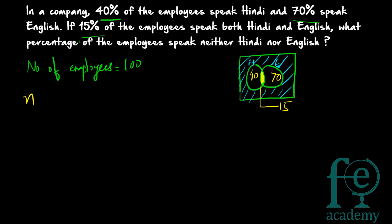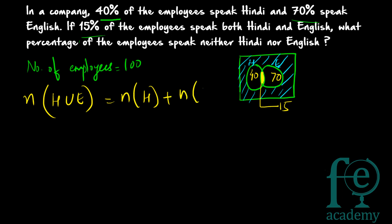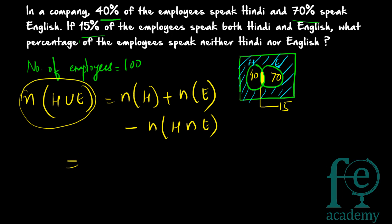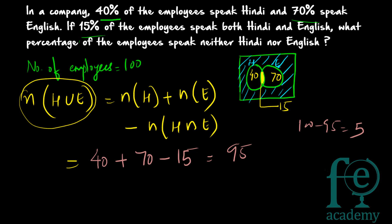Applying the formula: N(H ∪ E) = N(H) + N(E) − N(H ∩ E) = 40 + 70 − 15 = 95. So 95 employees can speak either Hindi or English or both. Since there are 100 total, 100 − 95 = 5 employees cannot speak either language.